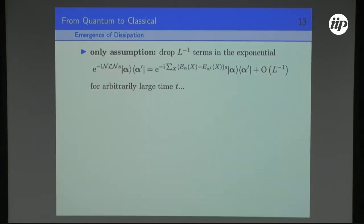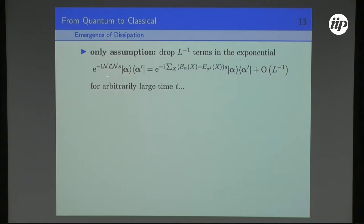The main physical assumption is that this two-step process — going from an eigenstate into the off-diagonal space and back — is the dominant process occurring in the system. The justification is that H of XY is suppressed by a power of 1 over L, so each additional H of XY brings more powers of 1 over L. This is not mathematically rigorous, since these 1 over L factors appear in an exponential and we're interested in very long time scales. But we'll make this assumption because everything will follow from it.